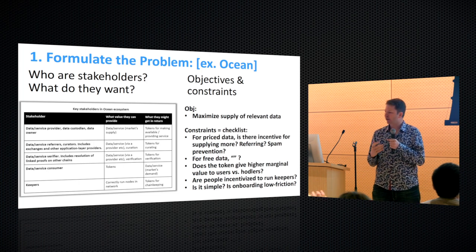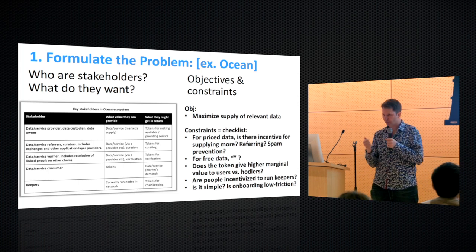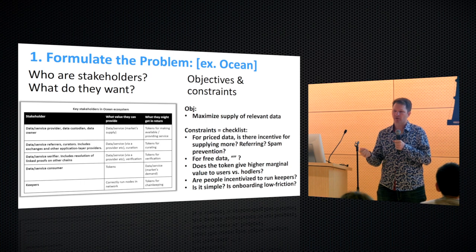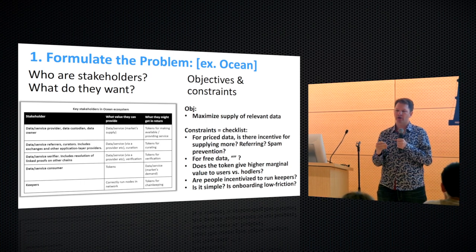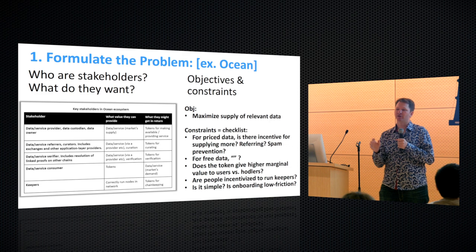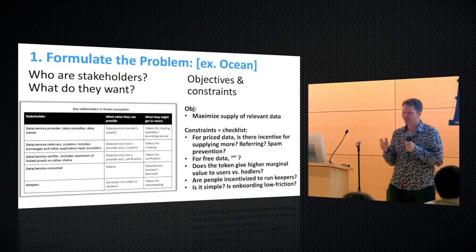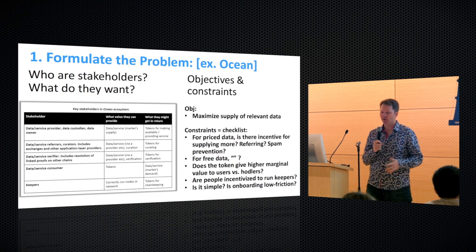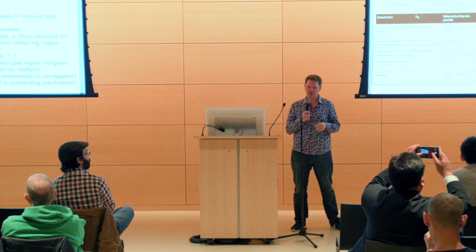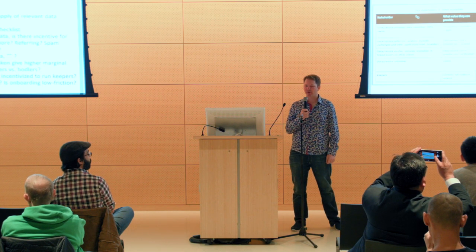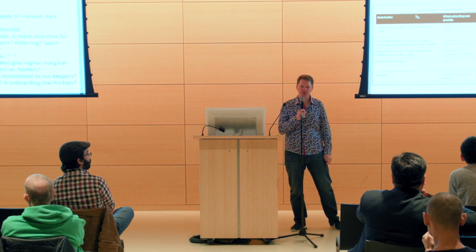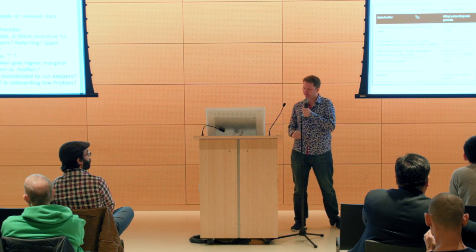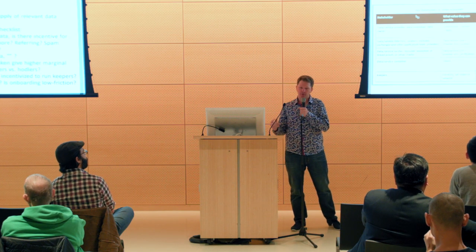Does the token give higher marginal value to users versus hodlers? This is actually a really useful constraint — thanks to Fred or Sam for teaching me this. What you don't want is everyone just hodling the coin and not engaging. Ideally, you have a lot more people engaging. Yes, it's higher velocity, which may affect token price. But velocity in general is a good thing. I really like Numerai, where the top 50 token holders have 67% engagement, which is really awesome — compare that to Bitcoin, where less than 0.1% of the network is running miners.